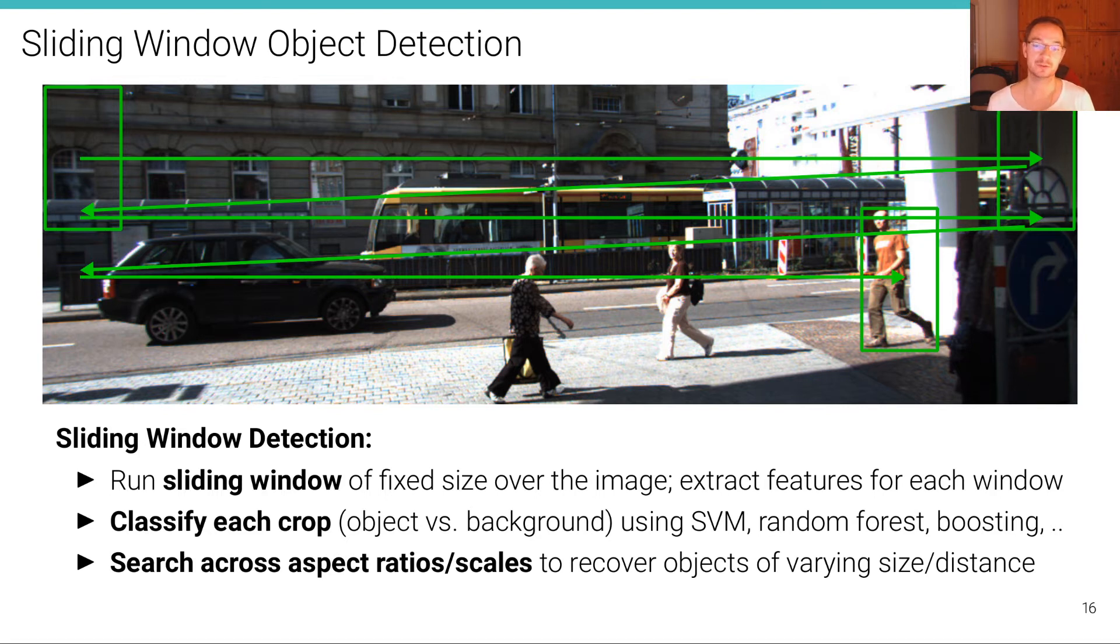In order to recover objects of varying size or distances, because we have a perspective camera here, if a pedestrian appears at a near distance, it's bigger than if it's appearing at a larger distance further away. We also have to search for different aspect ratios and scales of this box. So it's becoming a pretty exhaustive search problem.